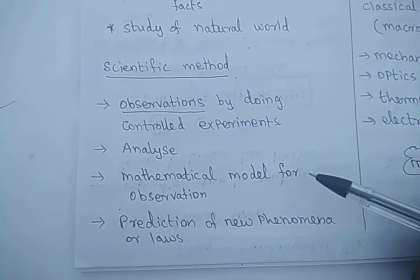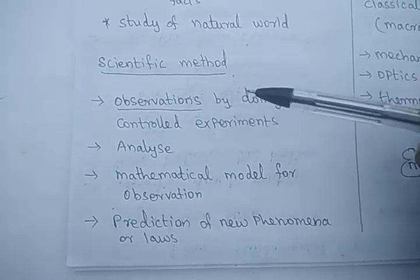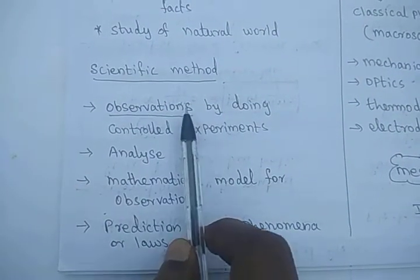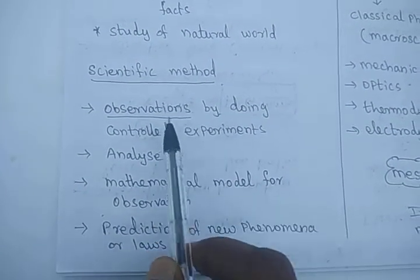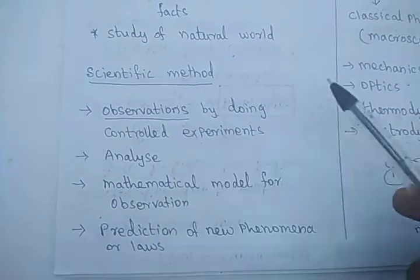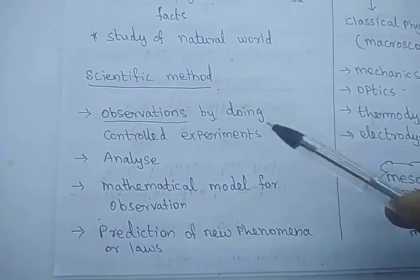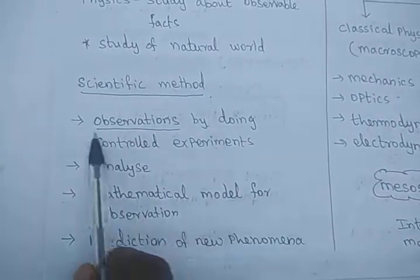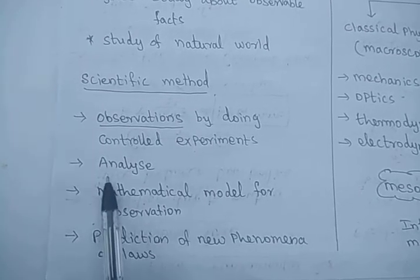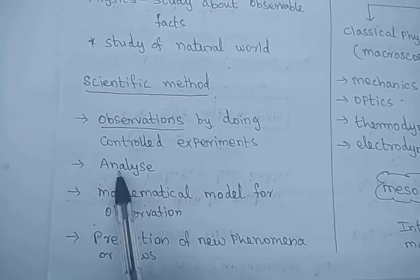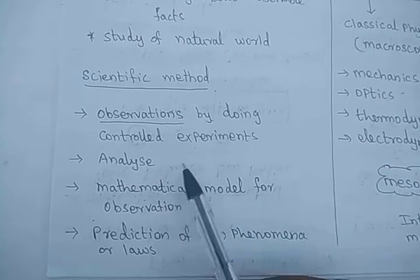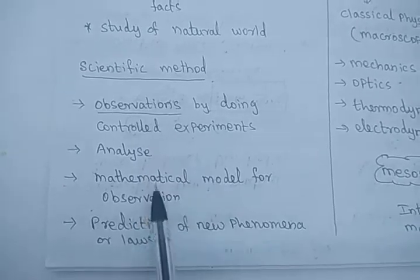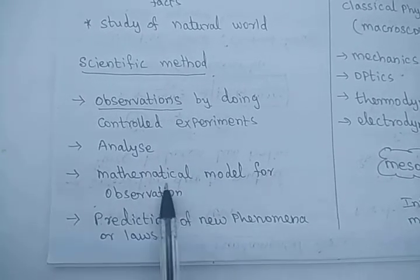First, we will see the scientific methods. Scientists first observe the facts — this may be a natural process or it may be done in the laboratory. The observation may be done in a natural process or by doing a simple experiment in the laboratory. By using this observable data, they will analyze the data — what is the input, what is the output, and what changes in output occur due to changes in input.